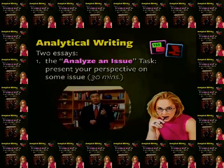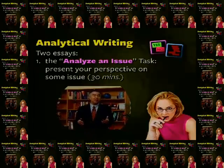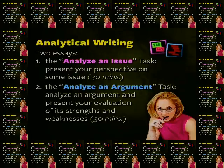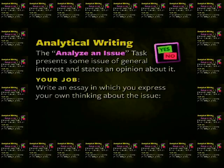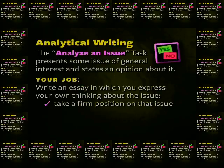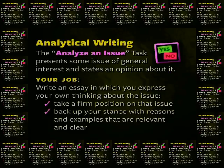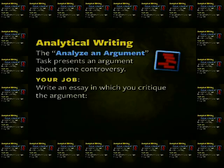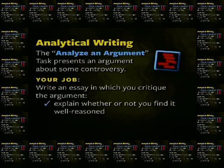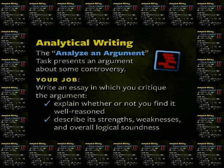The analytical writing section of the GRE includes two separately timed writing tasks. First, the Analyze an Issue task asks you to present your perspective on some issue. Second, the Analyze an Argument task asks you to analyze an argument and present your evaluation of its strengths and weaknesses. Both tasks require you to write an essay, and you'll be given 30 minutes for each. The Analyze an Issue task presents some issue of general interest and states an opinion about it — your job is to write an essay in which you express your own thinking about the issue, take a firm position, and back up your stance with reasons and examples that are relevant and clear. The Analyze an Argument task presents an argument about some controversy — your job is to write an essay in which you critique the argument, explaining whether or not you find it well-reasoned, and describing its strengths, weaknesses, and overall logical soundness.